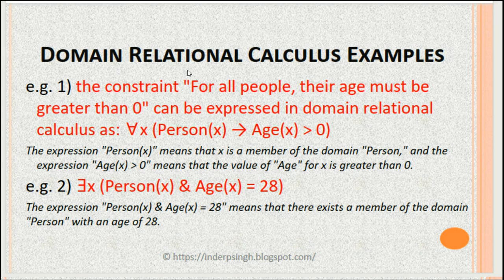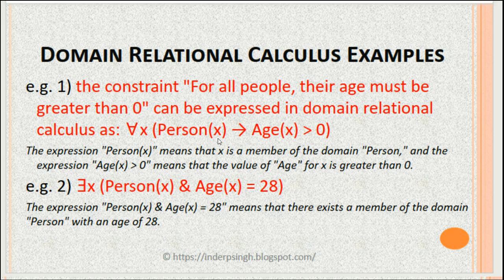Let's see expressions in domain relational calculus. For example, the constraint 'for all people their age must be greater than zero' is expressed as: for all x, person(x) implies age(x) > 0. Here person(x) means x is a member of the domain person, and age(x) > 0 means the value of age for x is greater than zero.